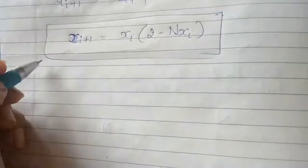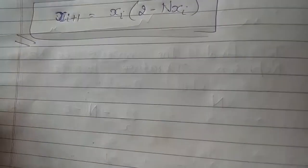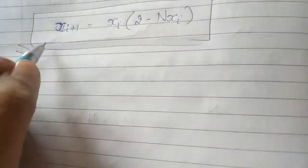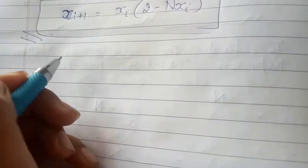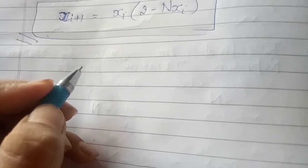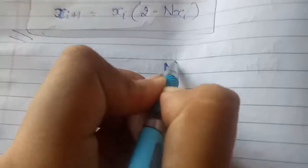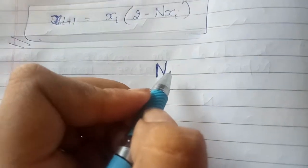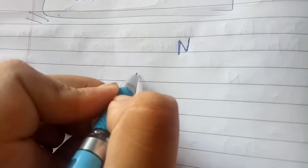Toh yeh hamara formula hoga inverse nikalne ke liye. Yeh wala hamara inverse ke liye tha. Toh main is par question le leti hoon is formula ko apply karne ke liye. For example, humein question mein given hai ki humein inverse nikalna hai — n given hai aur humein uska reciprocal nikalna hai. Humein value given hai: 1 upon 31.